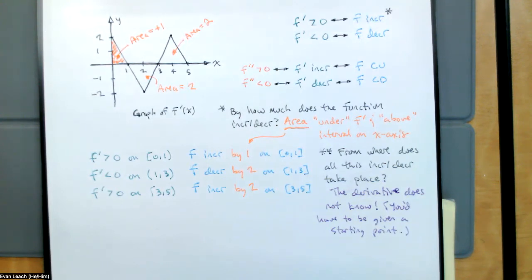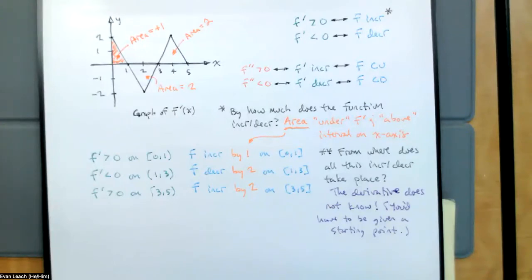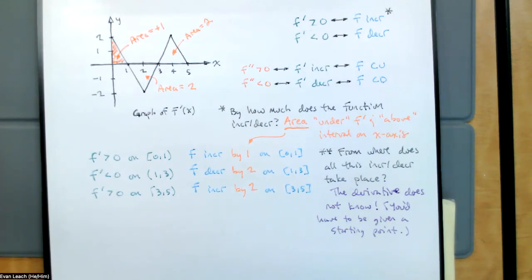There are two mysteries that came up last week. Increases by how much? Decreases by how much? The area solved that one. The other one: from where does all this increase and decrease take place? You need additional information — the derivative does not have it.